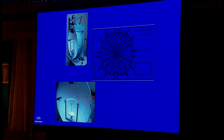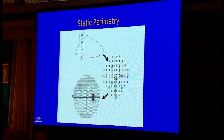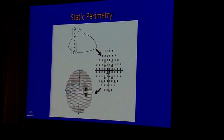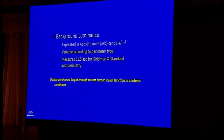Static perimetry measures the height of the legendary hill of vision. All the numbers you see in a visual field printout refer to the retinal sensitivity measured in terms of the height of the hill of vision.